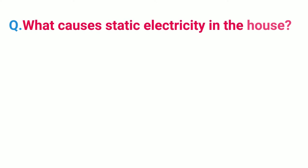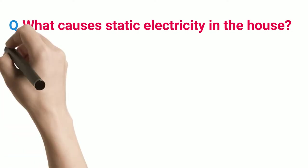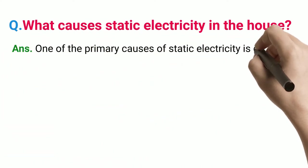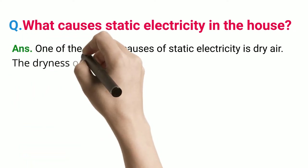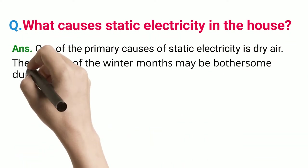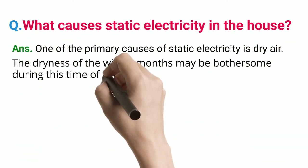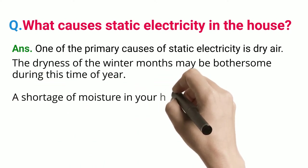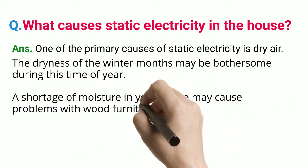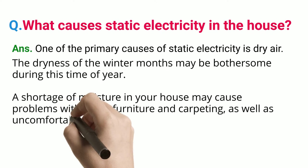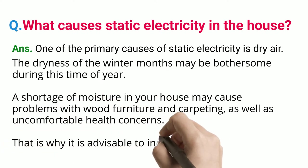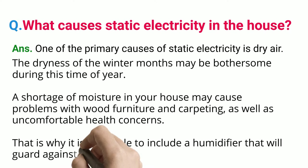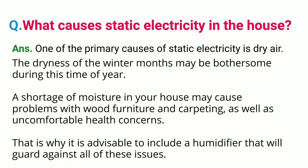What causes static electricity in the house? One of the primary causes of static electricity is dry air. The dryness of the winter months may be bothersome during this time of year. A shortage of moisture in your house may cause problems with wood furniture and carpeting, as well as uncomfortable health concerns. That is why it is advisable to include a humidifier that will guard against all of these issues.